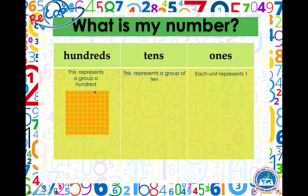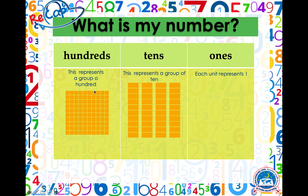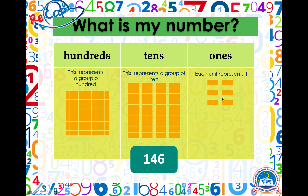Here we have one group of ten, one group of a hundred, four groups of ten and six groups of one. Can you guess what number this will make? If you've guessed that this makes the number 146, amazing — you are correct!